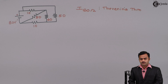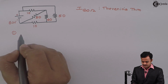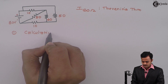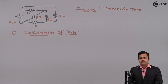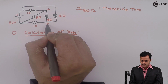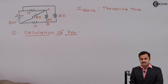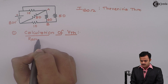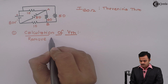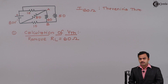We are going to solve the problem in four steps. Step number one: calculation of Vth. As per the theorem, whenever we have to find Vth we need to find the voltage between the terminals where the load is connected. So I will first mark those terminals A and B. For Vth, we need to remove the load resistance, which in this case is 60 ohm.